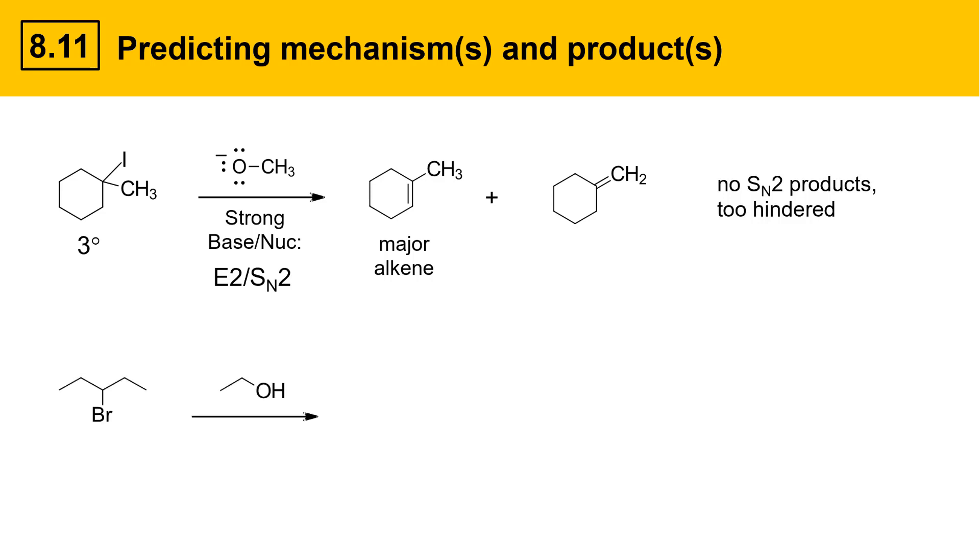Let's take a look at another example. Here we have an alkyl bromide reacting with an alcohol, ethanol. This alkyl bromide is secondary, and unfortunately, secondary alkyl halides are quite versatile, and they can undergo just about any type of reaction mechanism that we've seen, SN1, SN2, E1, E2. So we can't really narrow things down based on the substitution of the alkyl halide.